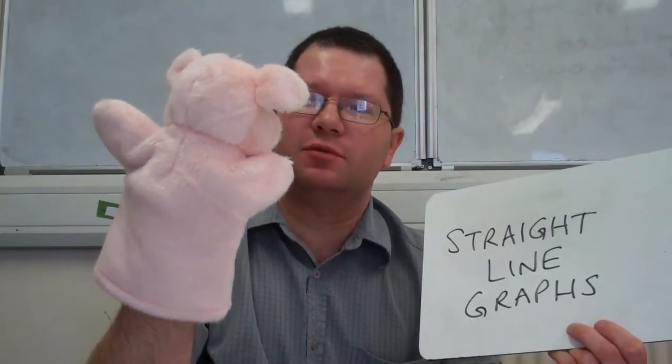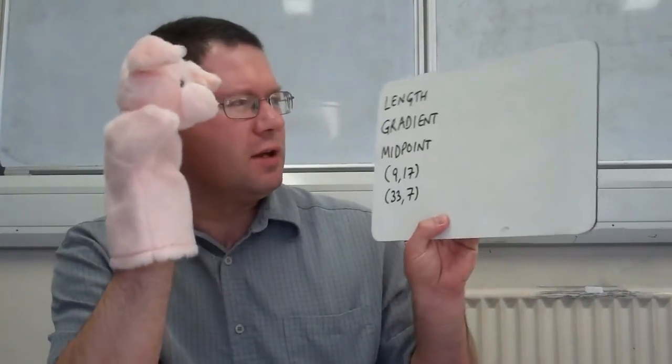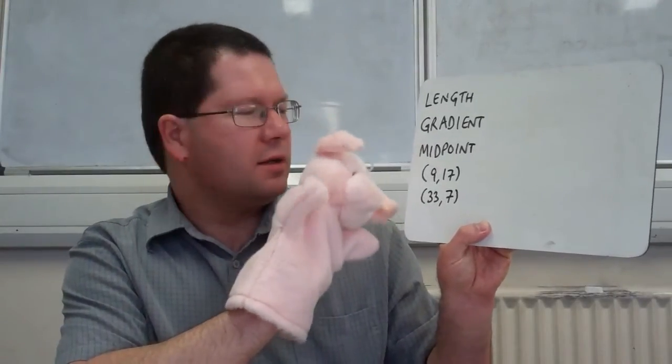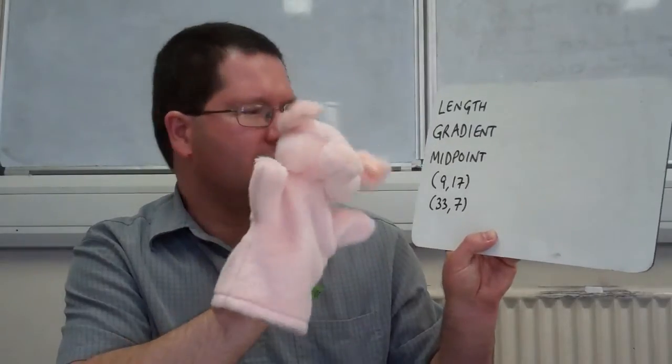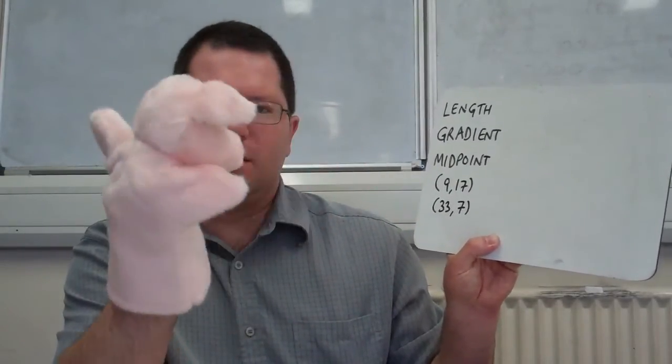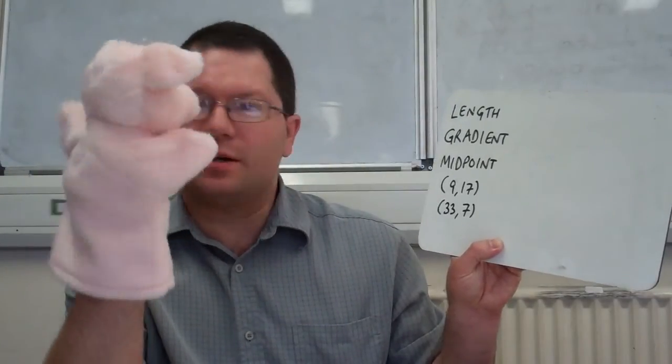Shall we get on and do some sums? Where shall we start? Shall we do something on length and gradients? Yeah, OK, so here we are. We've got some information here on the length, gradient and midpoint. We've got two points there, 9, 17 and 33, 7, yeah? OK, and we want to find out how far apart they are, yeah? And what the gradient is, slopey line, yeah, that's it, and the midpoint, halfway between them, yeah? OK, so how do we do that?